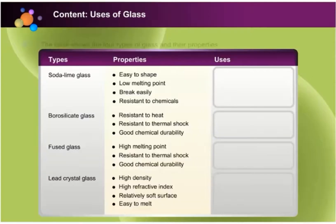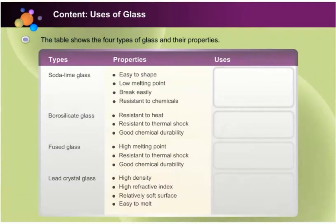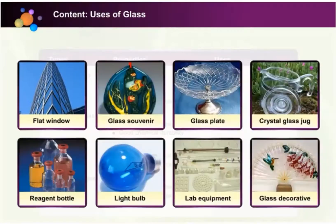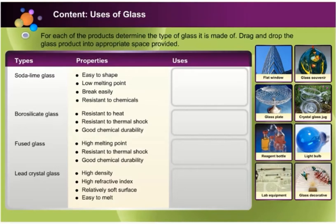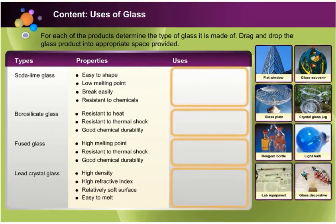The table shows the four types of glass and their properties. Study the examples of glass products shown. For each of the products, determine the type of glass it is made of. Drag and drop the glass product into the appropriate space provided.